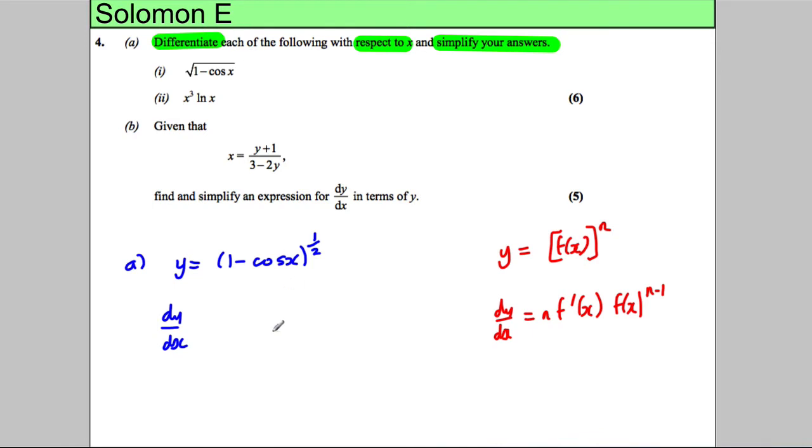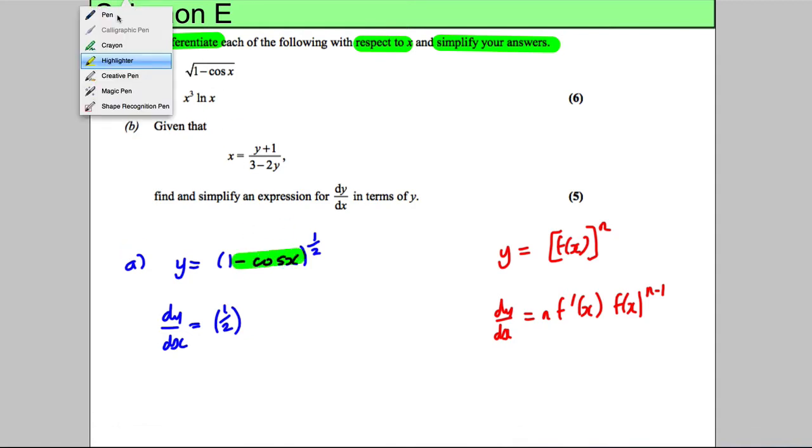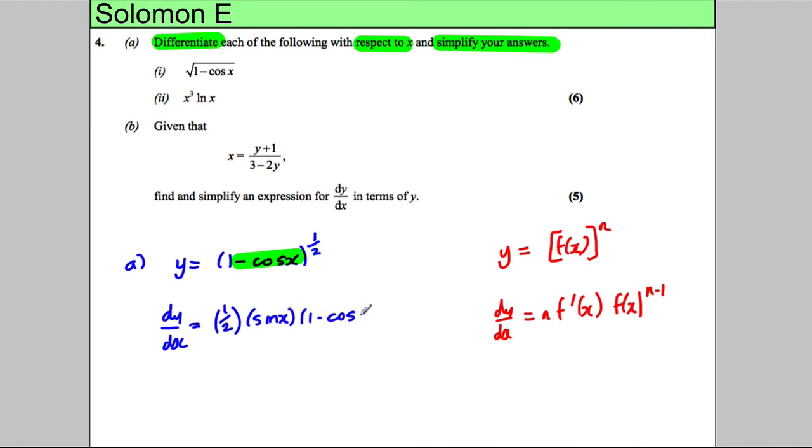I'll bring down the power of one-half and differentiate inside the brackets. The differential of cos is negative sine, so the differential of negative cos is positive sine X. Then we have 1 minus cos X to the power of negative one-half.